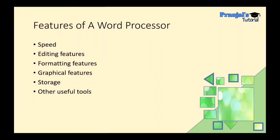Next are graphical features. In Word Processor we can use a lot of graphical features like images, tables, smart art, and charts. Next is storage — in Word Processor we can store our documents permanently on our computer system. There are also many useful features like spelling and grammar check, so we can easily check grammatical and spelling mistakes.